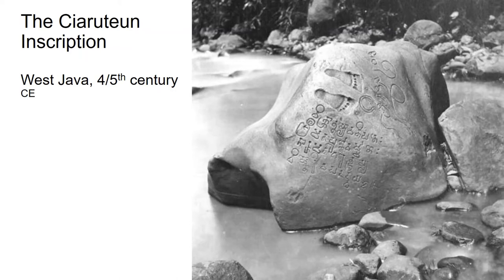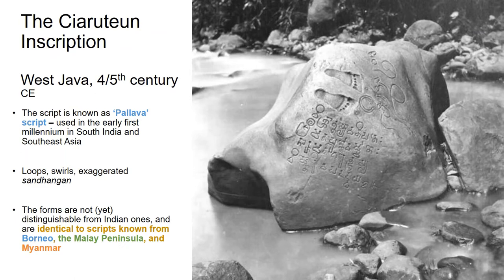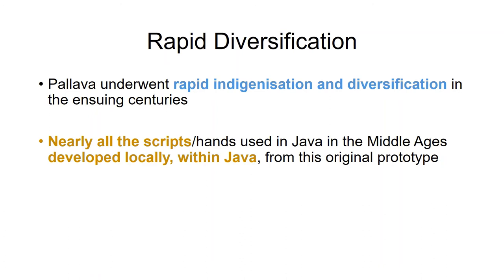The Pallava script is kind of loopy and swirly, with exaggerated ascenders and descenders — quite attractive. The forms are not yet distinguishable from Indian ones and are identical to scripts known from Borneo, the Malay Peninsula, Myanmar, and other parts of Southeast Asia at the same time. So for about a century or two, there is a common script in use from South India to island Southeast Asia. But then there's a rapid diversification and indigenization of Pallava, especially in Java.